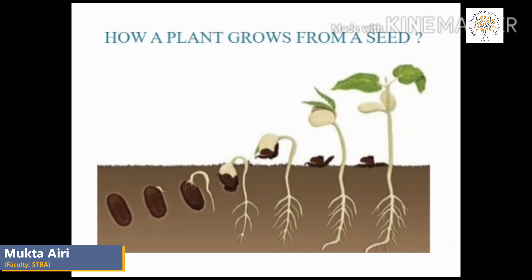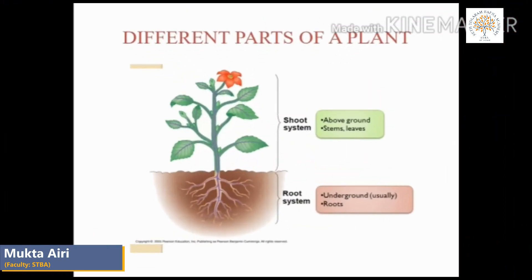How do plants grow? Plants grow from seeds. Each seed contains a tiny plant waiting for the right conditions to germinate. Now let us know more about the parts of a plant and their functions. Different plant parts do different jobs. A plant has two main parts: the part that grows under the ground is called the root system, and the part that grows above the ground is called the shoot system.